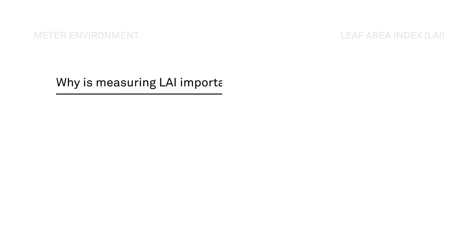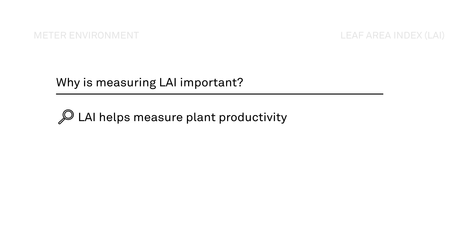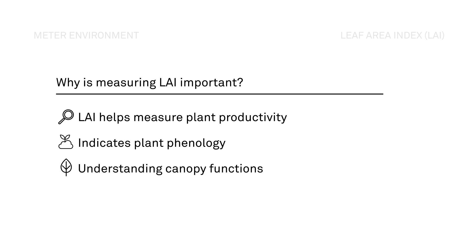So why measure leaf area index? This simple yet important measurement helps researchers understand plant productivity by characterizing the canopy's capacity to absorb light. LAI also indicates when plants are moving through their seasonal stages, known as phenology. It's also key in determining transpiration, understanding how much biomass a certain canopy can produce, radiation use efficiency, and much more.